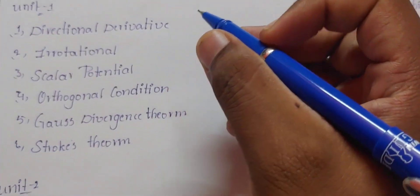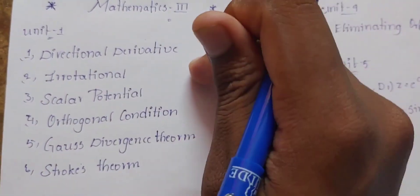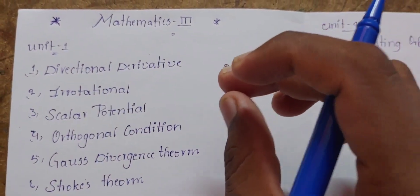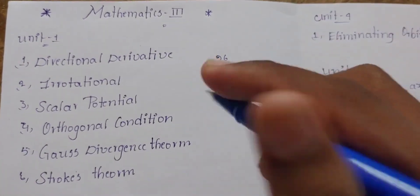Directional derivative, irrotational scalar potential, and orthogonal condition in all the topics, of course. Simple formulas depending on the direction. This is the main and easy formulas depending on the equation.